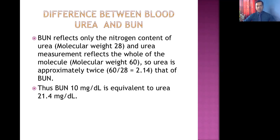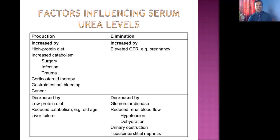From today, remember BUN and blood urea are not the same term. Factors which increase blood urea production include: high protein diet, since urea is an end product of protein metabolism synthesized by the liver from ammonia; increased catabolism because of major surgery, widespread infection, or severe trauma — all increase urea level.